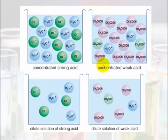On this side here I have a concentrated weak acid. It is a weak acid because it has not readily donated those hydrogen ions. It is concentrated because there are lots of particles per volume of solution.